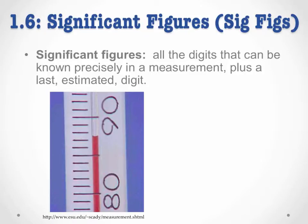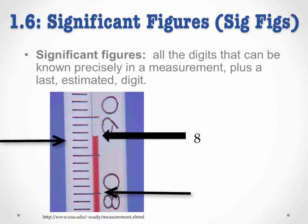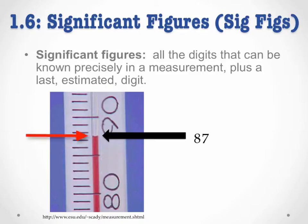For instance, if I'm measuring the temperature of a substance using this thermometer, as you can see the temperature lies right here. What digits do I know for sure? Well, I know the measurement definitely starts with an 8, and I know the measurement is going to have a 7 after that. Notice there's no marking between 87 and 88 — that's where my estimated digit comes in. I'm going to say that's about a half, so this measurement would be 87.5 degrees Celsius. My significant figures are the 8 and the 7 because we know them precisely, and the 0.5 because that's our last estimated digit.